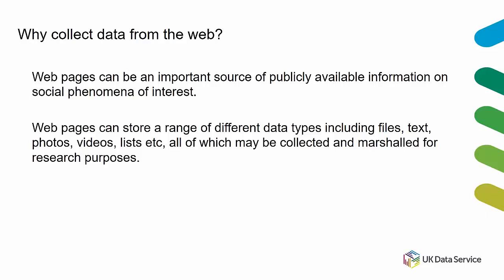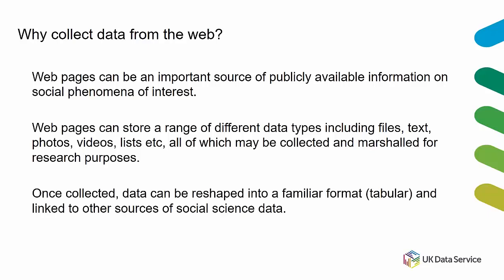There's lots of data stored on web pages — files you can download, photos, videos, lists, tables of statistics — all of which may be collected and repurposed for statistical or qualitative analysis. Once collected, data may be in an unfamiliar format, but you can process it and put it into a familiar rows-and-columns structure. It can then potentially be linked to other sources of social science data. For example, COVID-19 case or death rates could be linked to official statistics on transport use in the UK, enabling causal or quasi-experimental analysis of which interventions have the biggest effect.